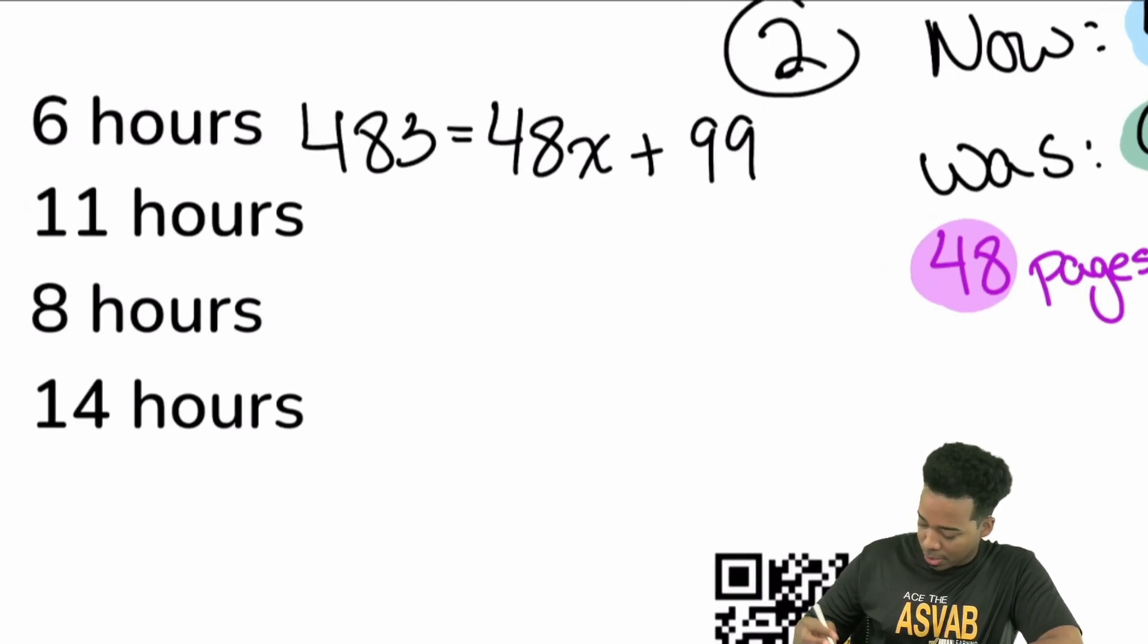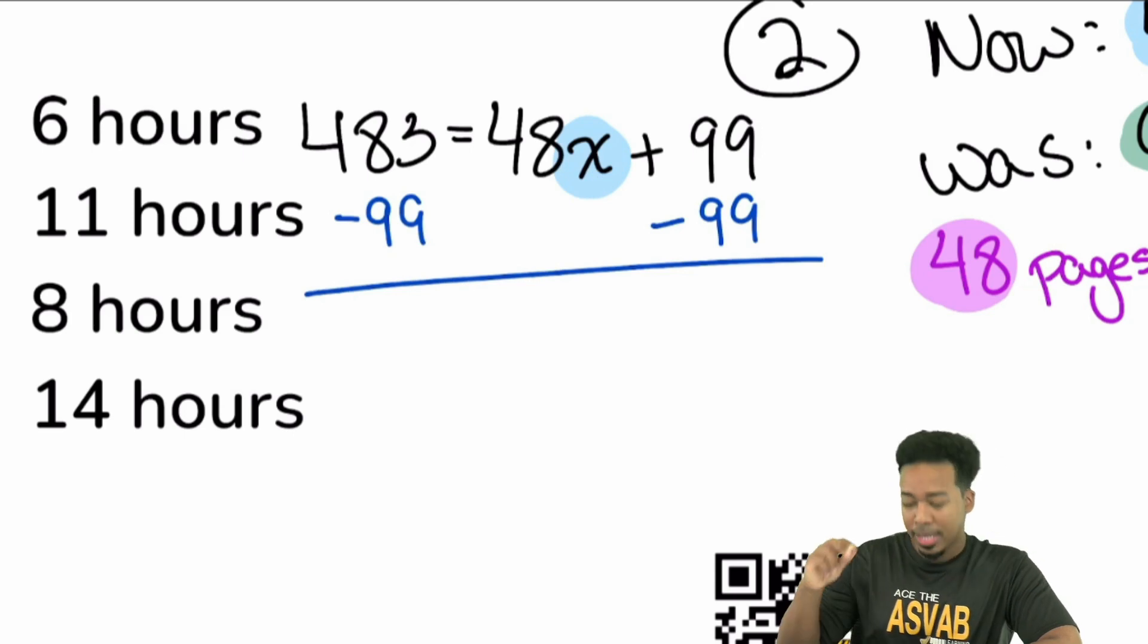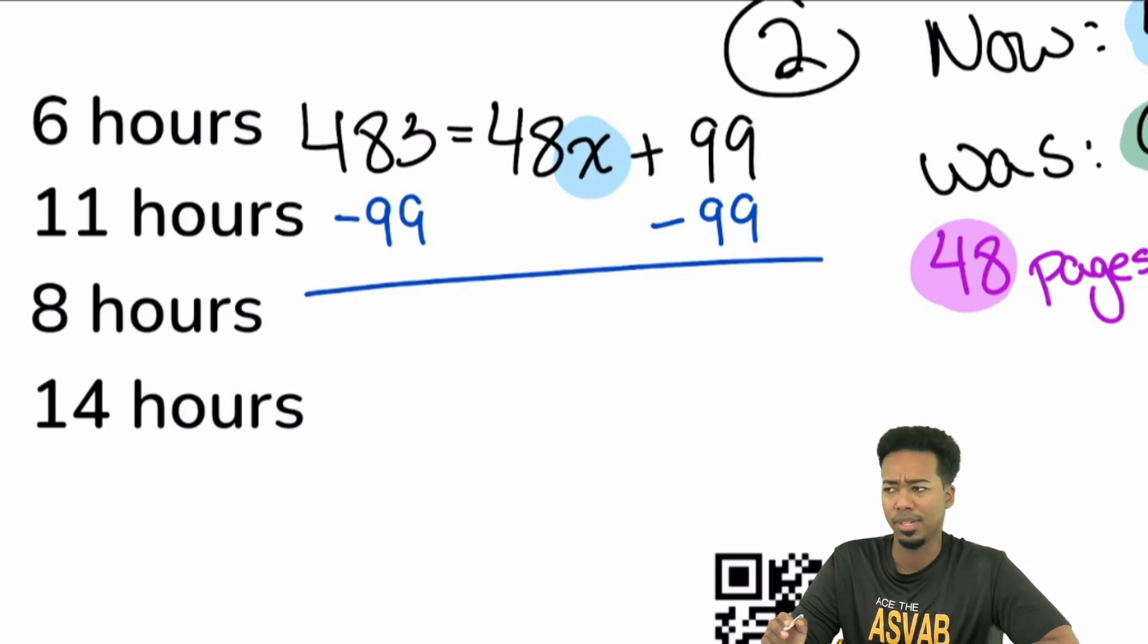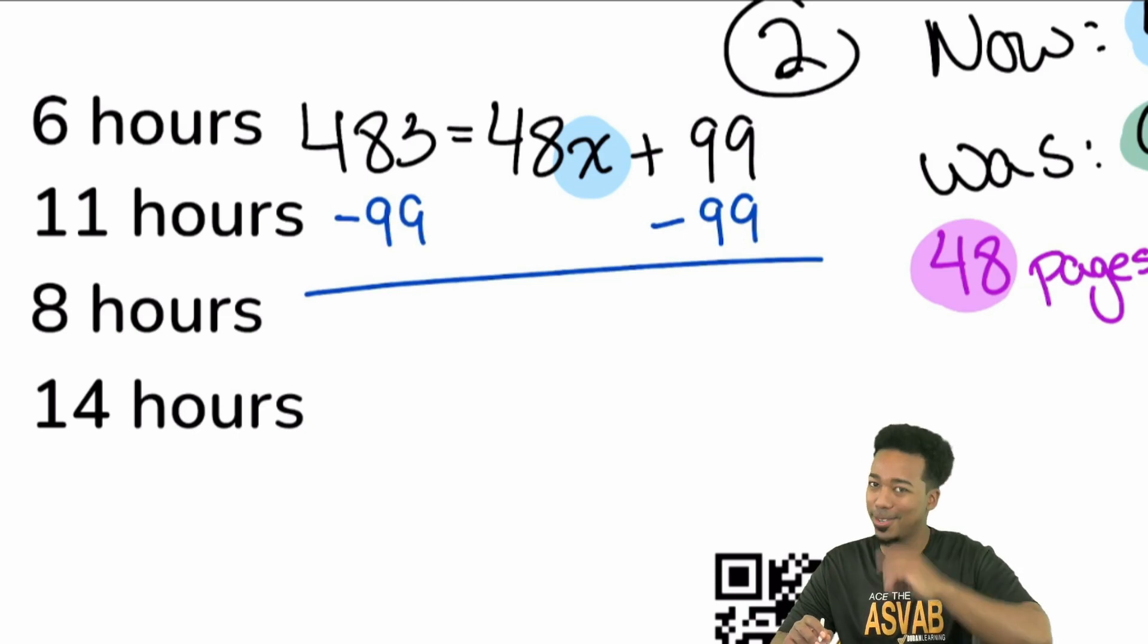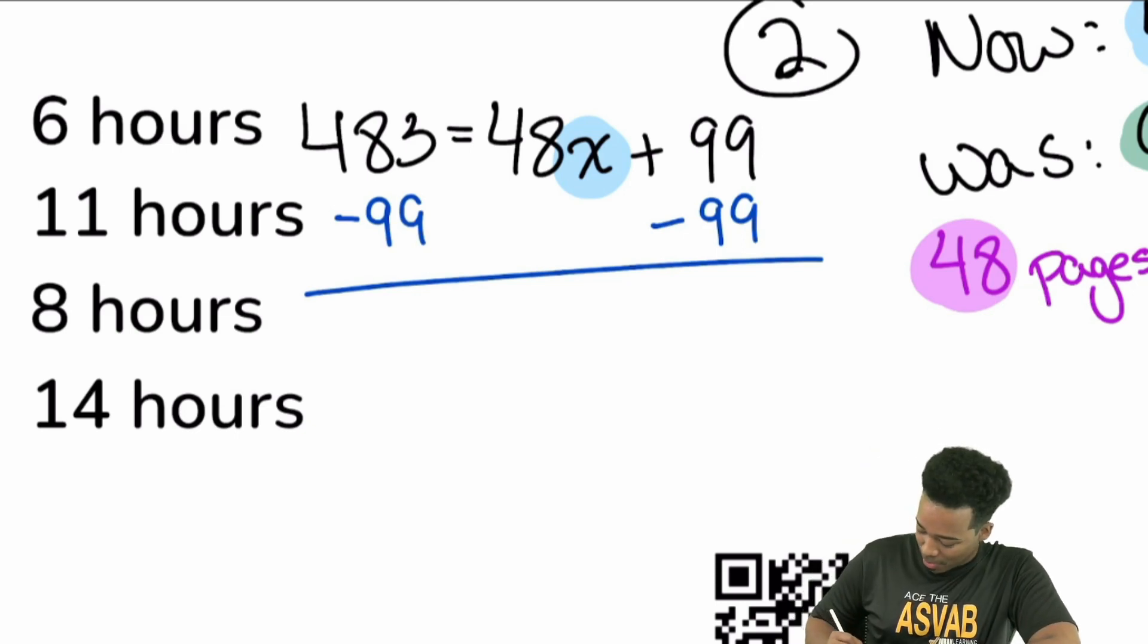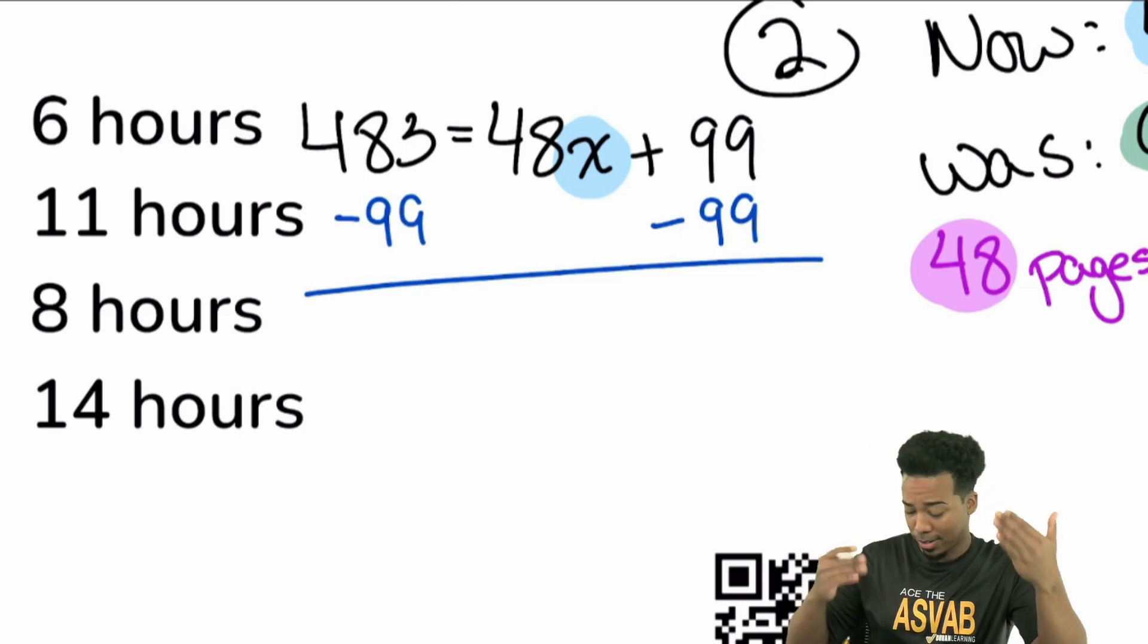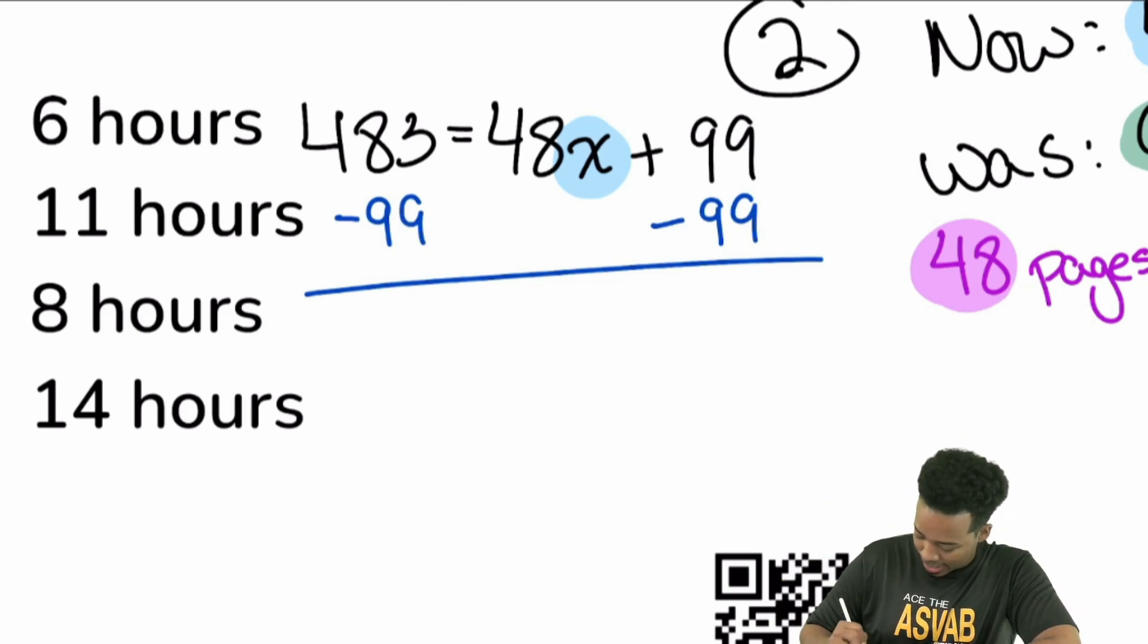Next up, we're going to solve this equation. We want to find x by itself. So what I'll do is I'll get that 99 out of the way by subtracting 99 on both sides. Now, if you're sitting here already thinking, man, I got to subtract 99, I don't want to do that, you don't have to. You can also just take away 100, then add one back. Mental math trick, if you're in my program, you know what's up. I'm going to take away 100, add one back. So 383, 384 instantly. That's 384 equals 48x.